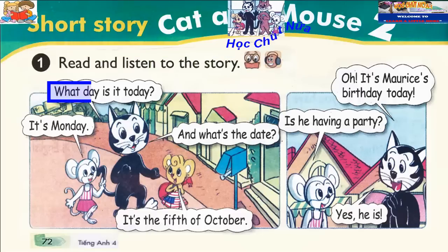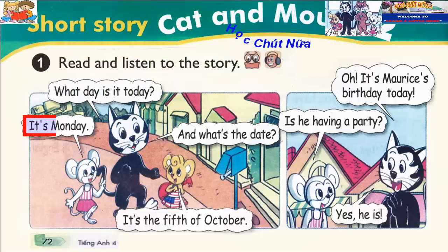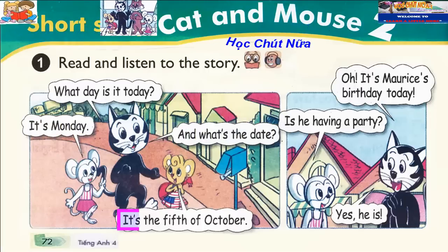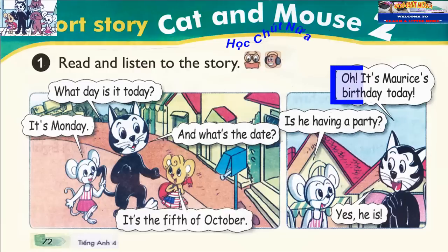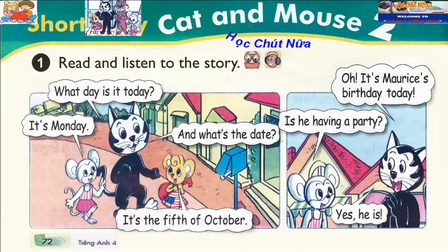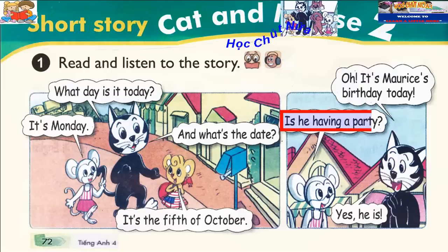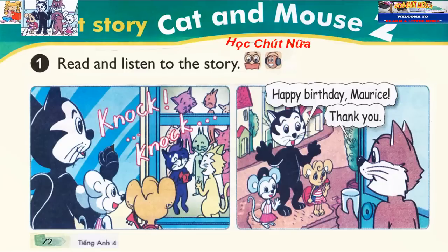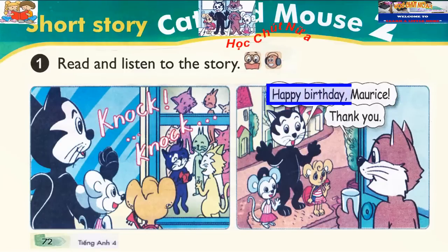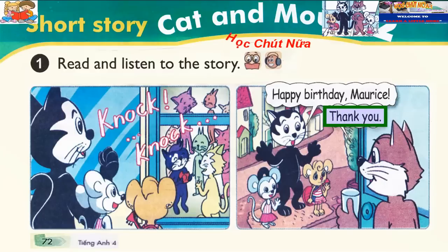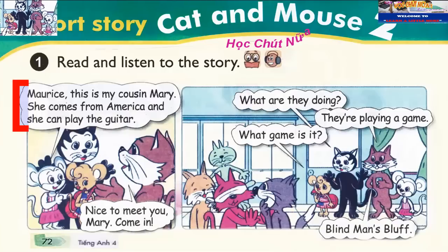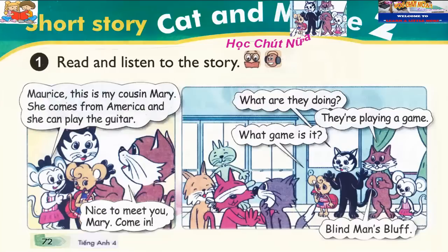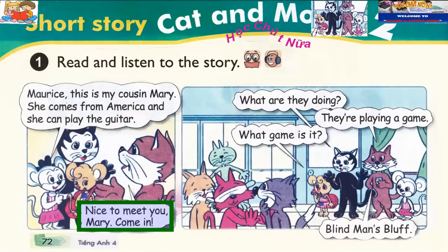What day is it today? It's Monday. And what's the date? It's the 5th of October. Oh, it's Morris' birthday today. Is he having a party? Yes, he is. Happy birthday, Morris. Thank you. Morris, this is my cousin Mary. She comes from America and she can play the guitar. Nice to meet you, Mary. Come in.